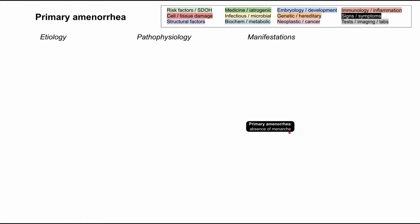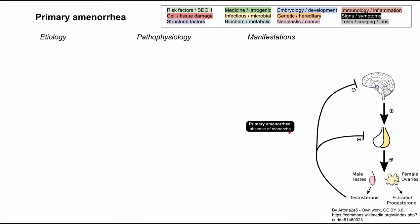There are a number of things that can cause this, and we're going to break it down into four big categories. But first, let's do a quick overview of the HPG axis — that's the hypothalamic-pituitary-gonadal axis — which is the pathophysiology that plays a major role in regulating your period in women.